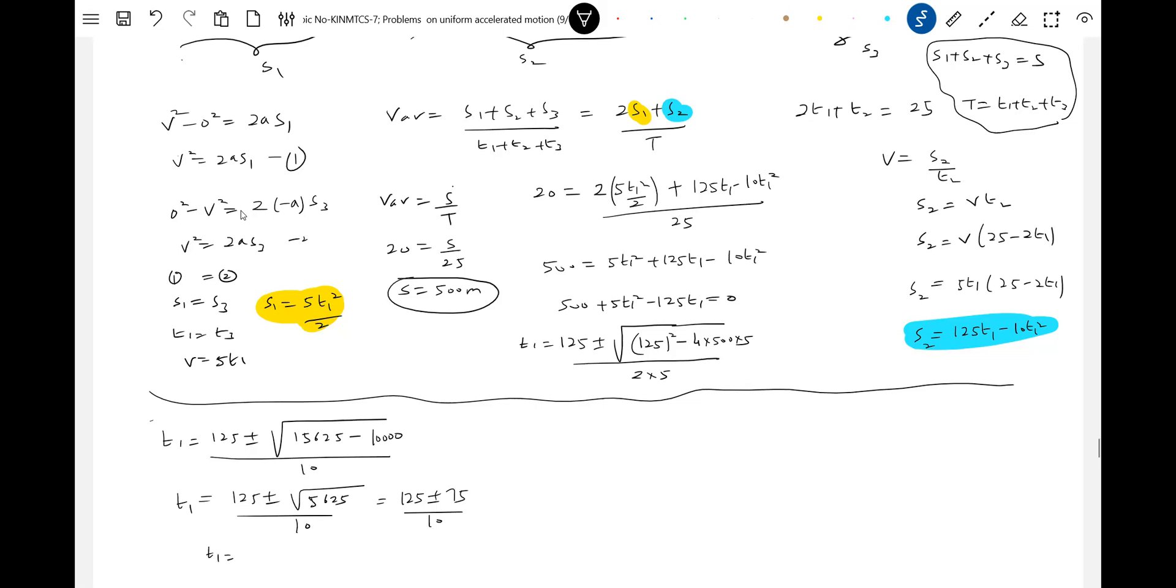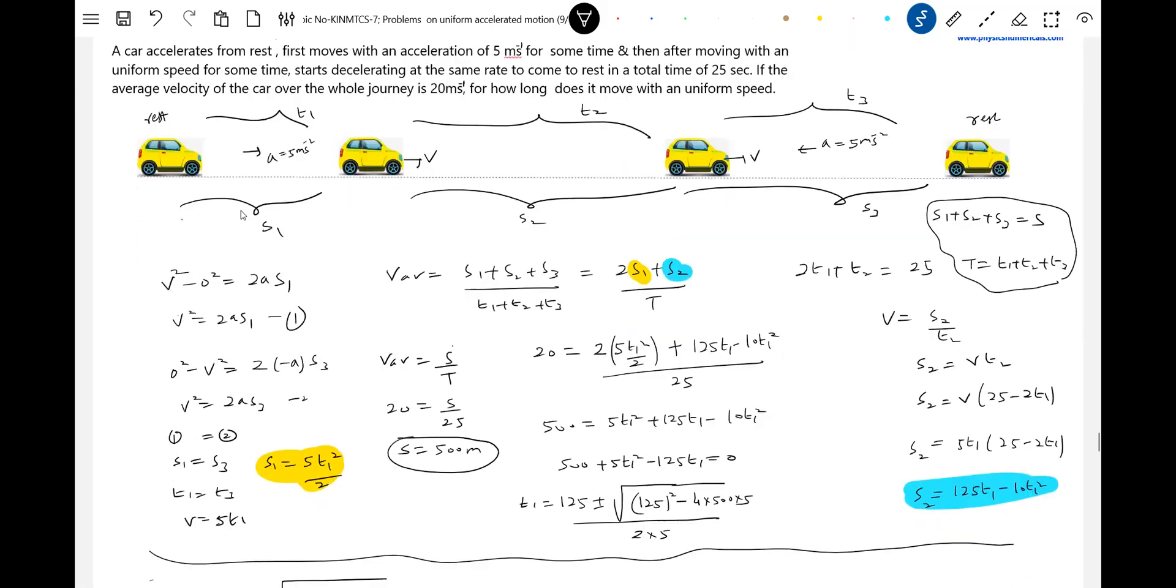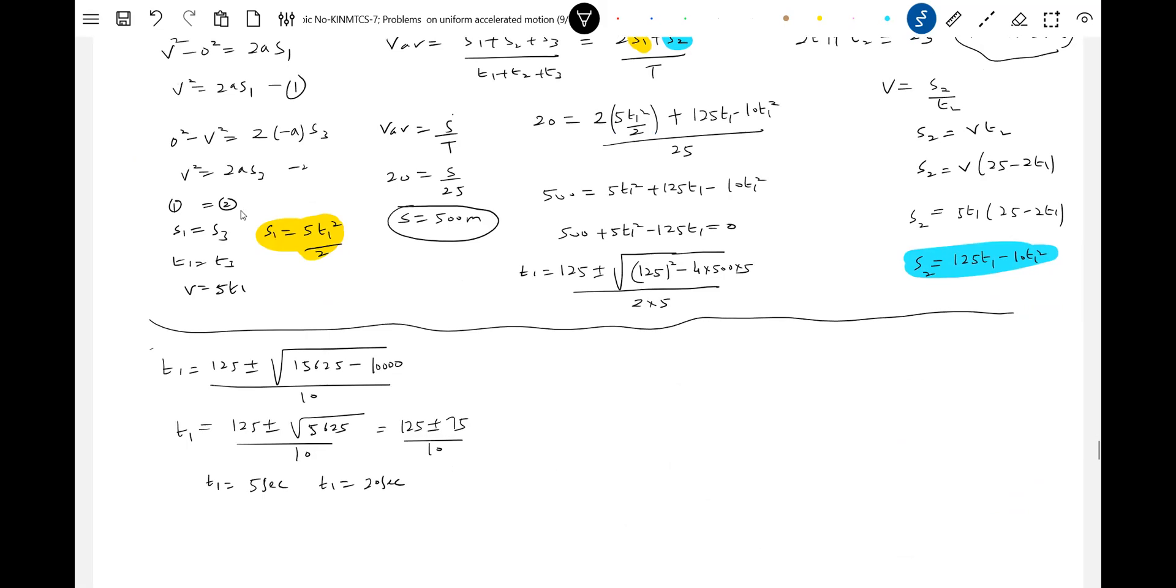What are the values we can pick up? 125 plus minus 75. 125 minus 75 will be 50, divided by 10 is 5 seconds - one answer. Another answer will be 125 plus 75, which is 200, divided by 10 is 20 seconds. Total time is 25, so this is not possible. This 5 seconds is the possible value.